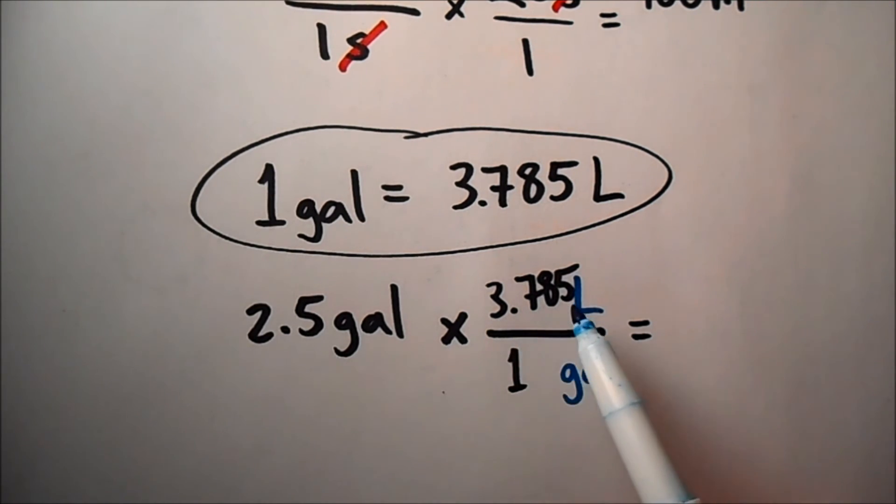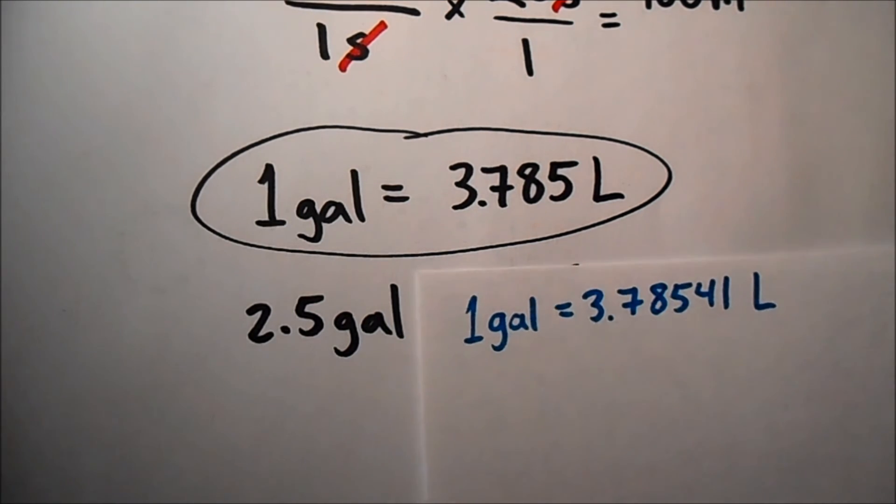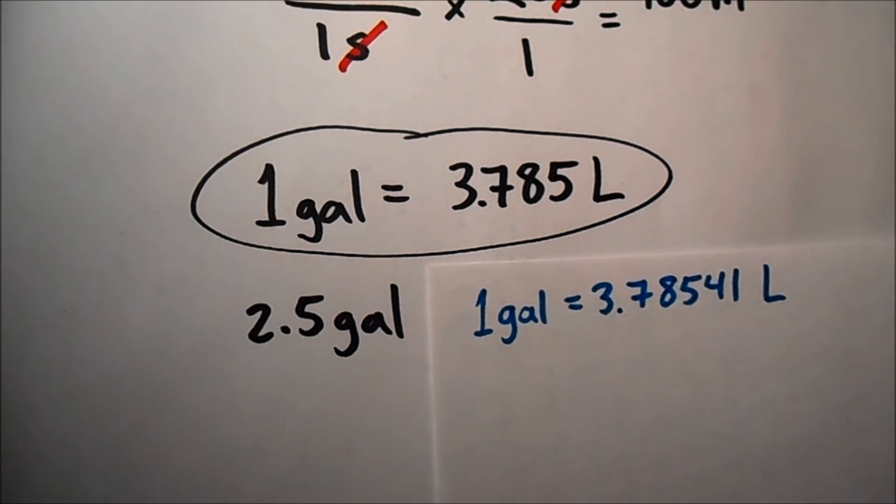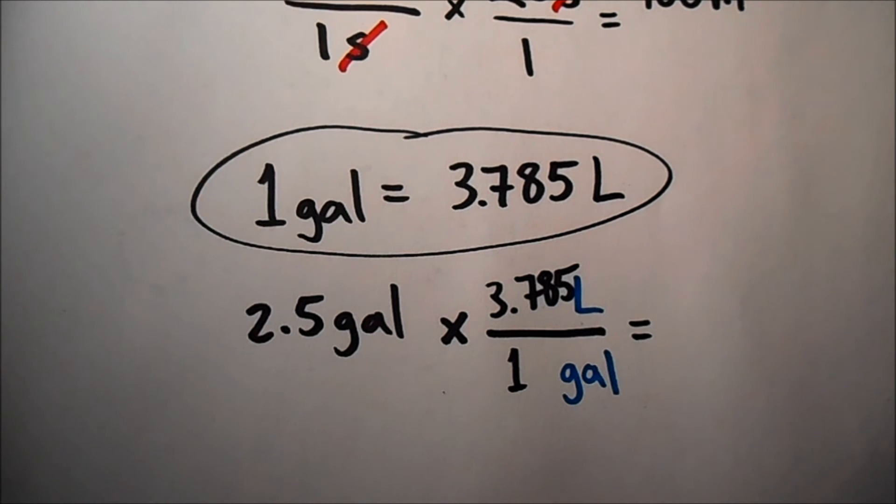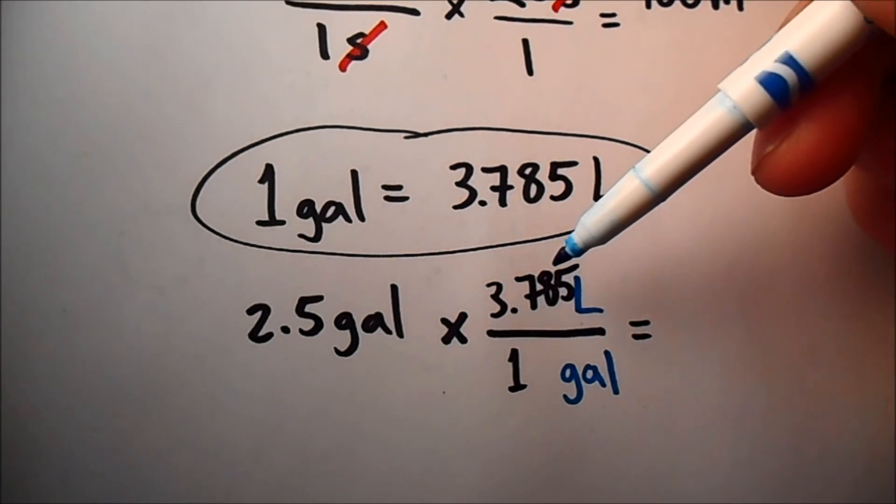This number here, 3.785, this actually is also a measured value. This 1 is just an idea, 1 gallon, the concept of a gallon. But this 3.785, this is a measured out value of how many liters add up to exactly 1 gallon. In truth, that number is not 100% accurate. 1 gallon is more precisely measured out to be 3.78541 liters. But let's say we're doing a problem where we are only told that it's 3.785 liters.